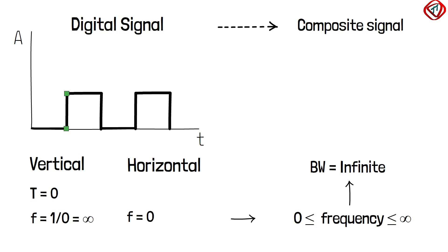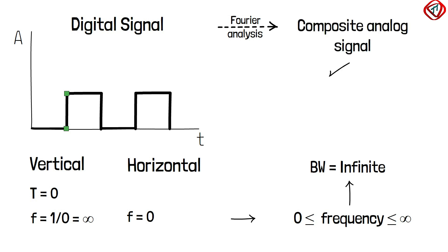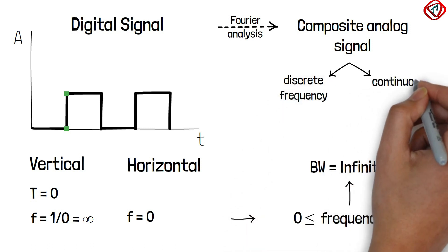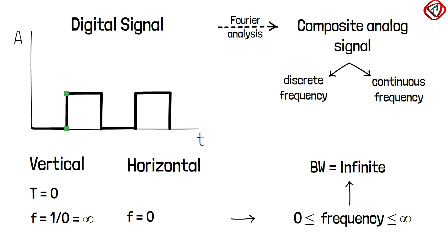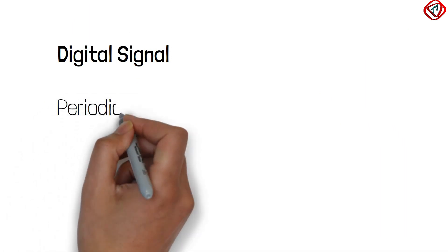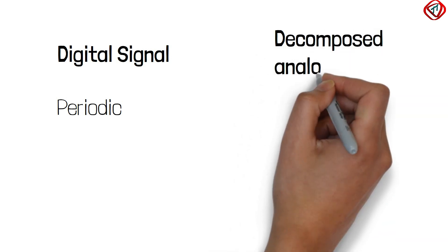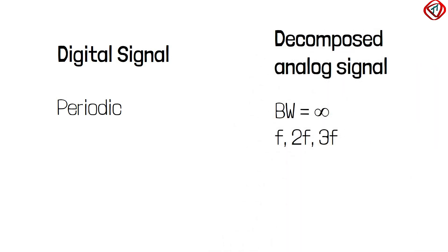The decomposition of a digital signal by Fourier analysis results in a composite analog signal, which can have either discrete or continuous frequencies. Discrete frequency means frequencies with integer values, for example f, 2f, 3f and so on. Continuous frequency means frequencies with real values, for example 1.2f, 1.3f, 4.5f, etc. In a periodic digital signal, which is rare in data communication, the decomposed analog signal has infinite bandwidth and discrete frequencies. On the other hand, if the digital signal is non-periodic, the decomposed analog signal will have infinite bandwidth and continuous frequencies.